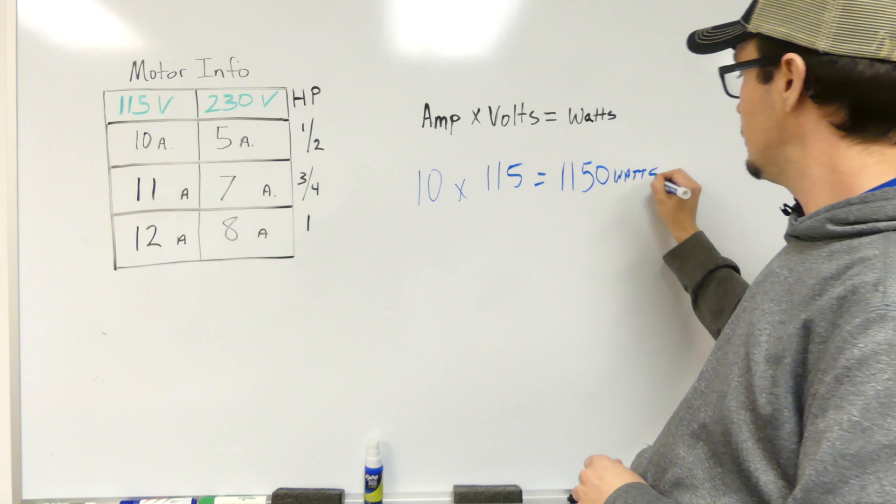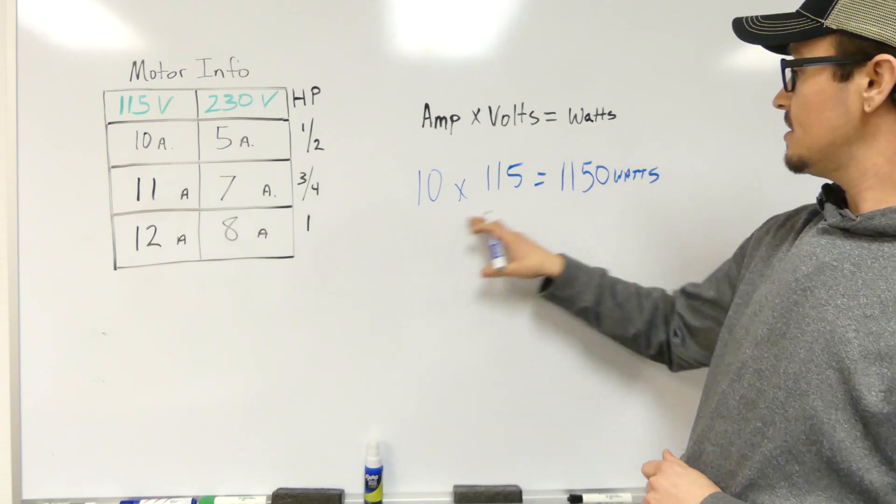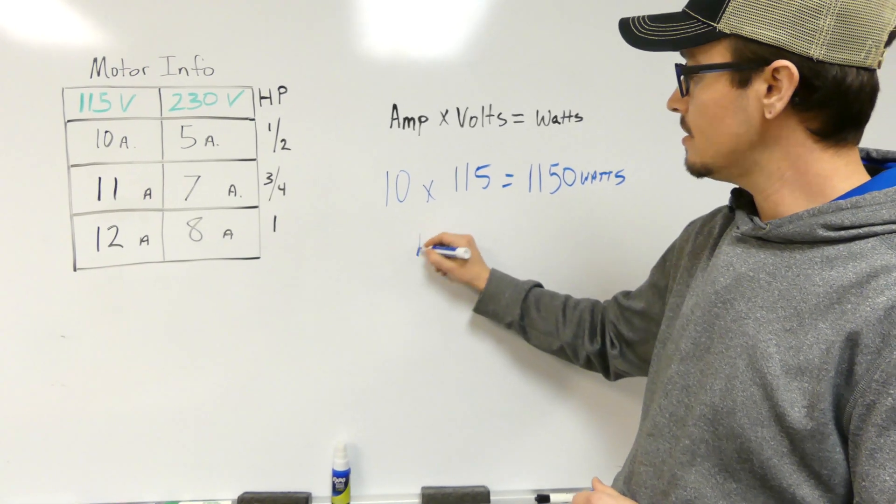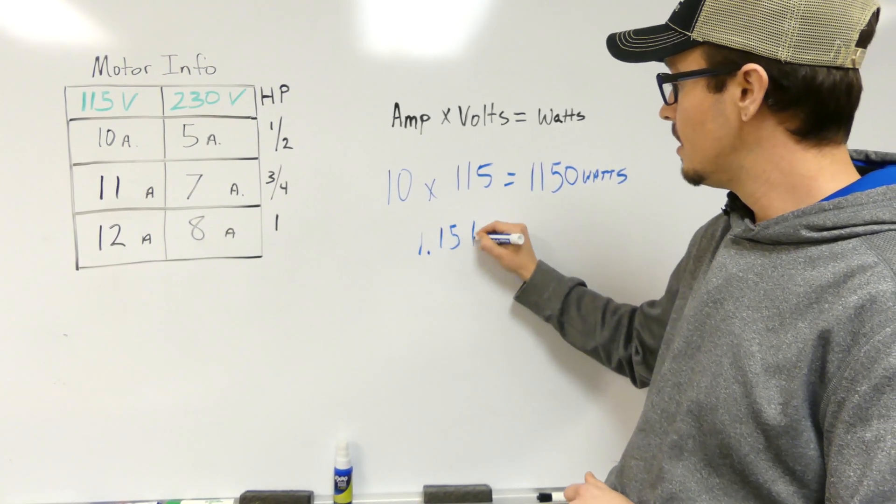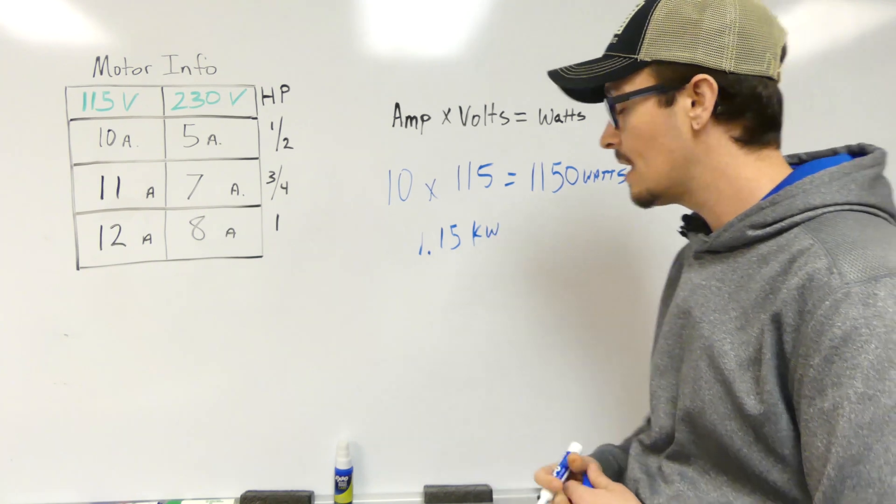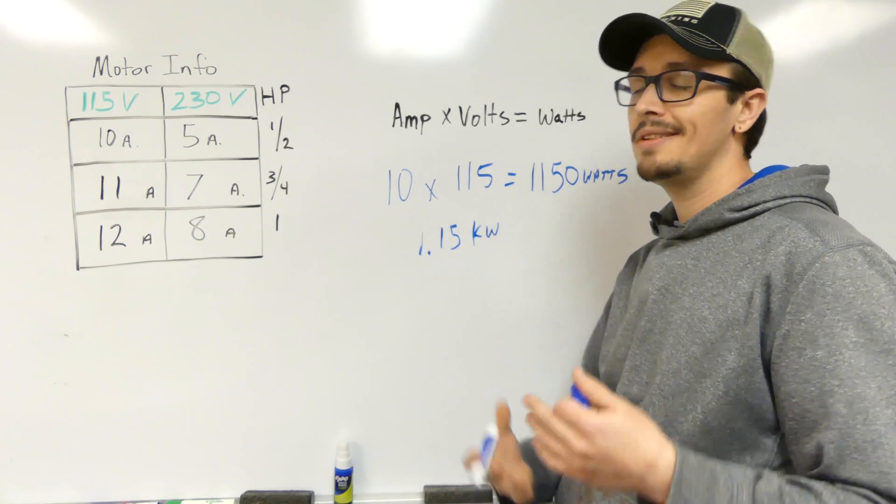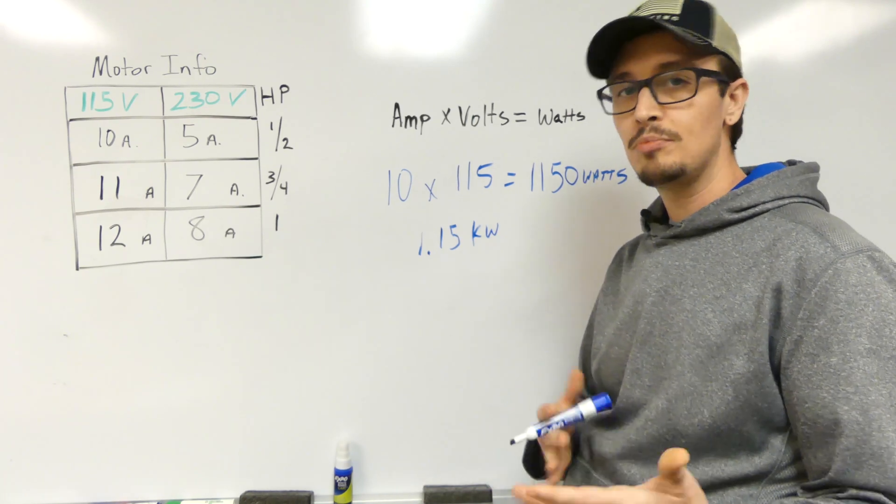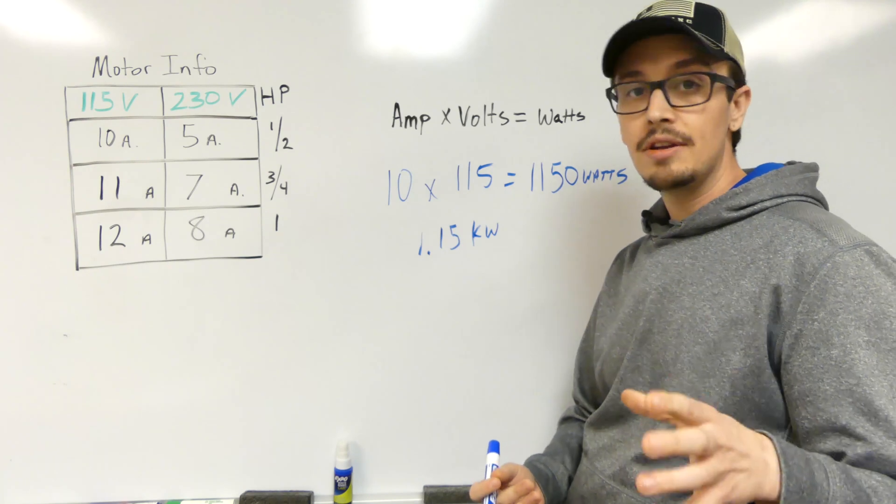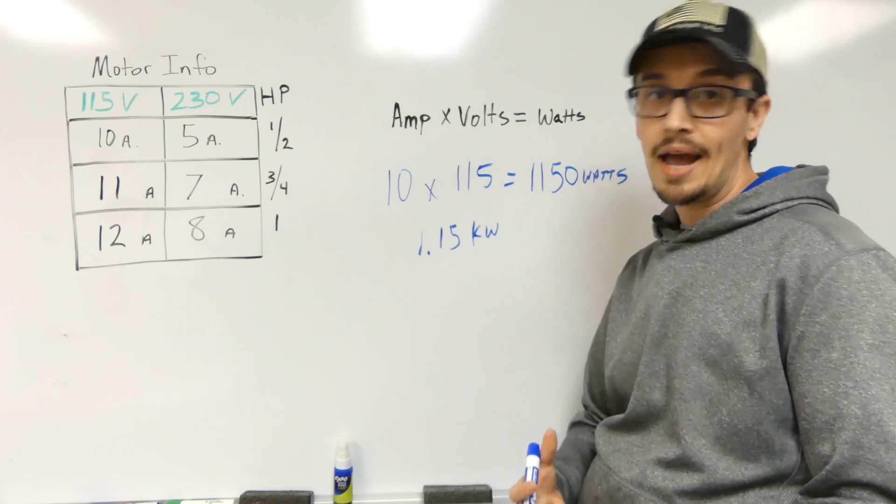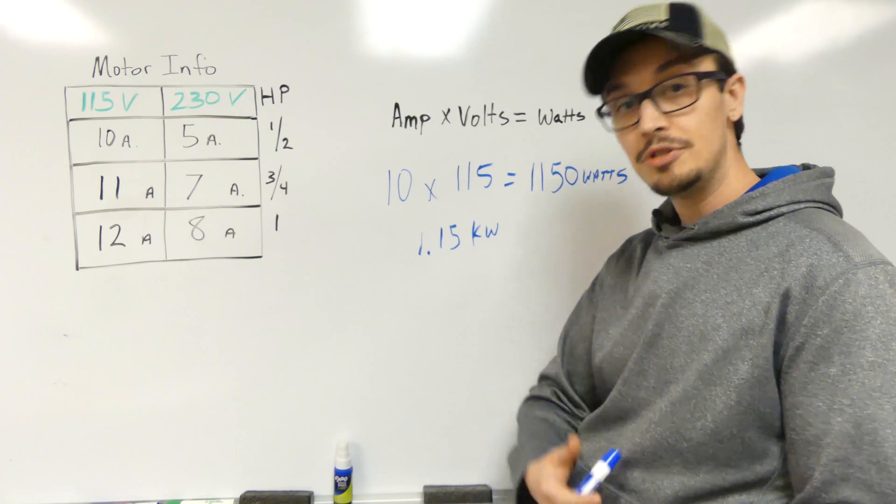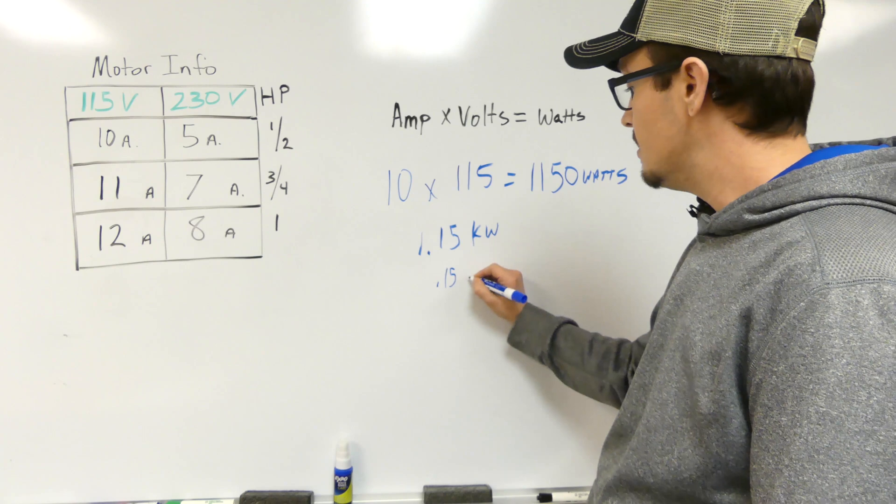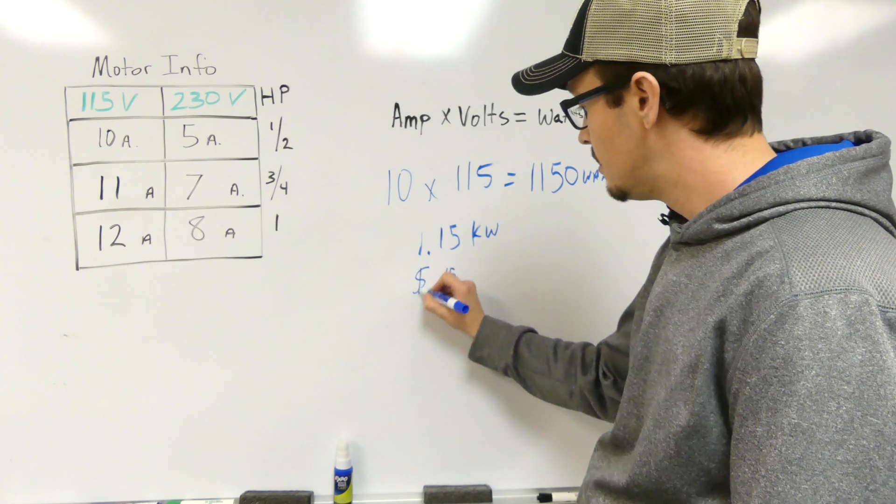And then basically we can take this watts, so we know that 1150 watts is 1.15 kilowatts. And then we've got the national average for electricity costs are about 15 cents per kilowatt hour. Make sure you check your energy bill if you want to get more accurate on your particular area. Some places power is cheaper, some places it's more expensive. We're just going to use 0.15 cents.